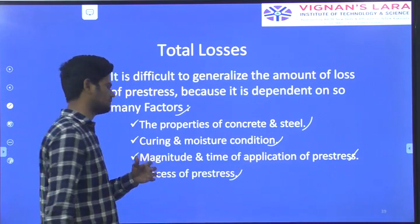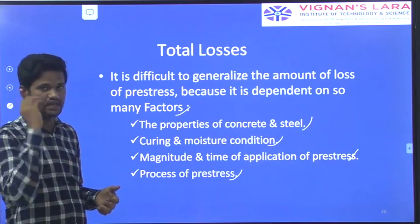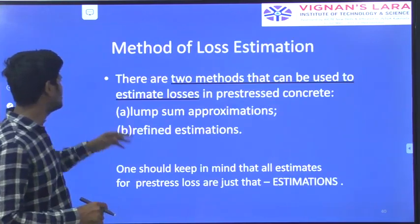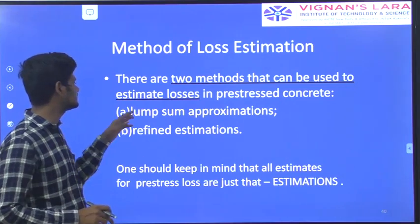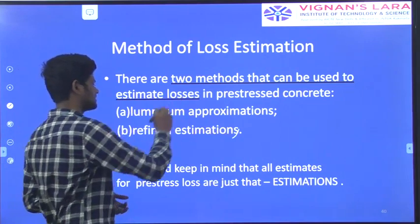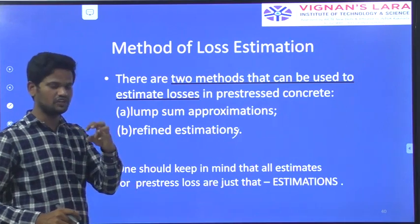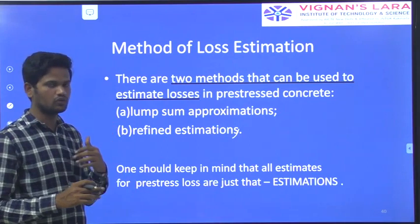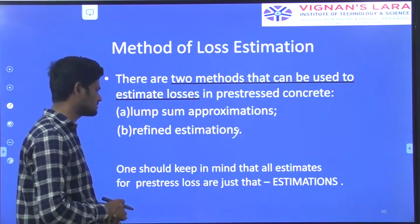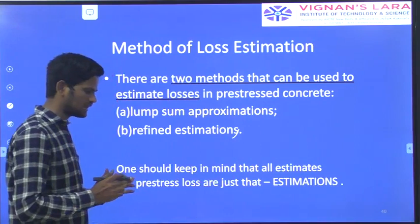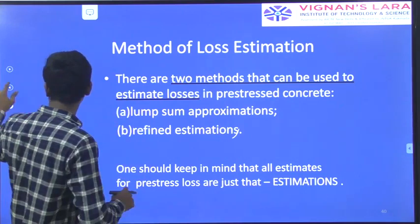The process of pre-stress is already familiar from the first and second chapters, where you have seen the manufacturing process of pre-stressed concrete and post-tension members. Regarding methods of loss estimation, there are two methods: lump sum approximations and refined estimations. Lump sum analysis is the usual method; it gives a more accurate calculation. One should keep in mind that all estimates for pre-tension loss are just estimations — not exactly applicable in practical field conditions.